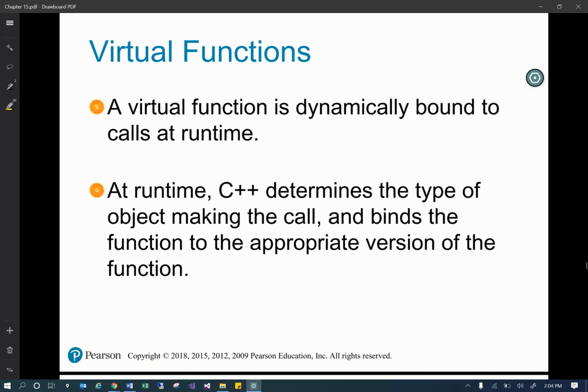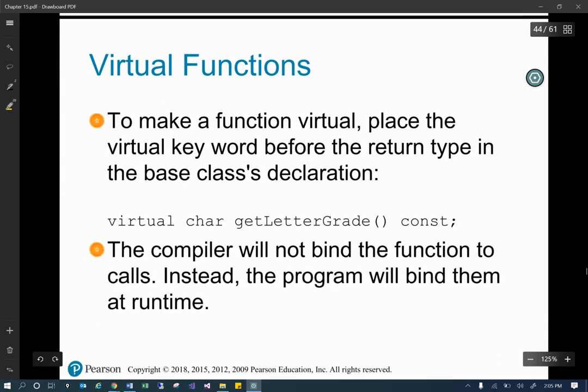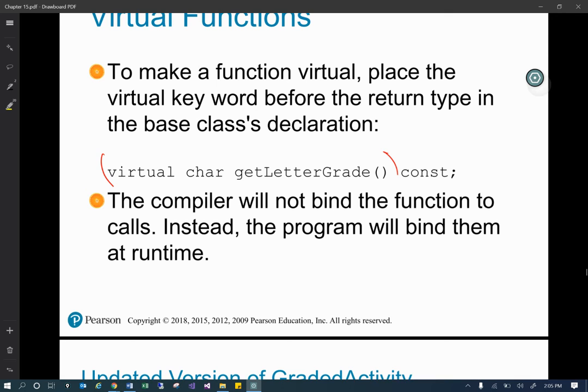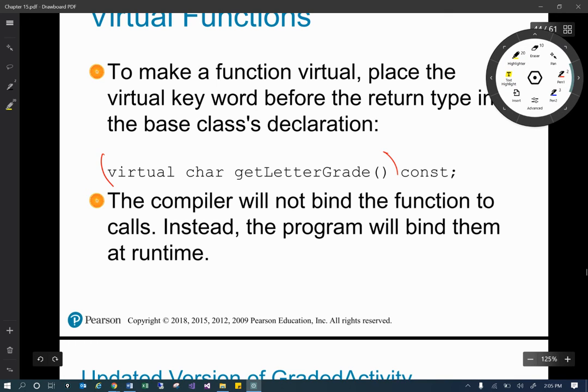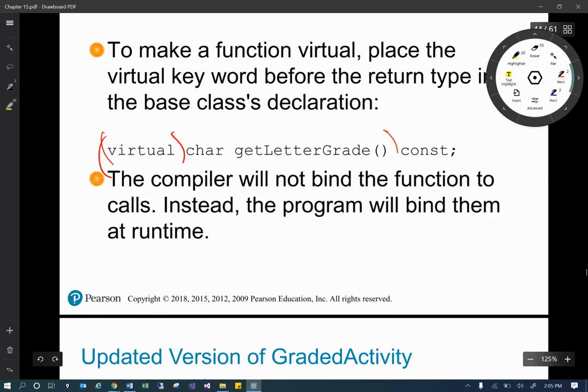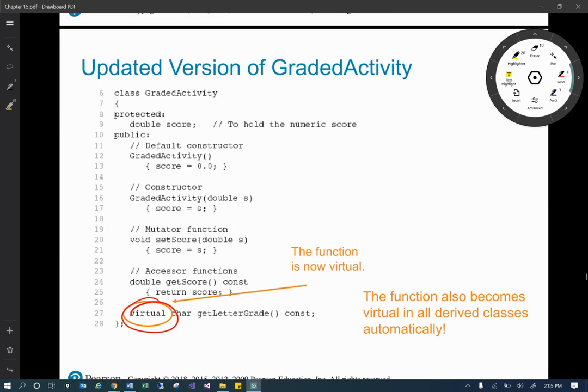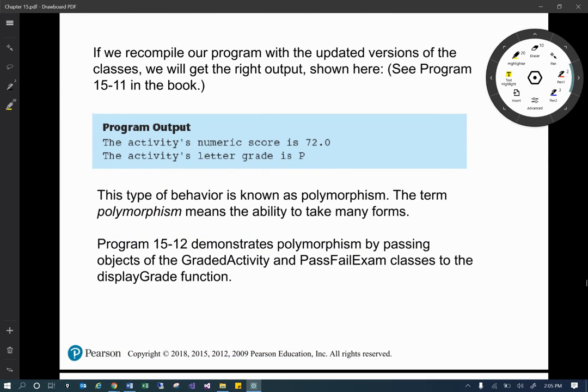Virtual functions. A virtual function is dynamically bound. It does not statically at compile time figure it out and does it at runtime. At runtime, C++ determines the type of object making the call rather than statically when it's compiling. And we just showed that, how to make a function virtual. And here they're even showing it. They've now made that virtual. We recompile our program with the updated version of the class. You're going to see now it's going to call the right one.